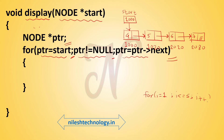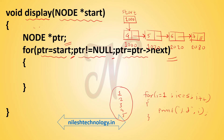For example: for i equal to 1, i less than or equal to 5, i plus plus — and here we print printf percent d i. So i equals 1, 1 is less than 5, true, print 1; then 2, 3, 4, 5; then 6 is less than 5, false. So the output is 1, 2, 3, 4, 5.